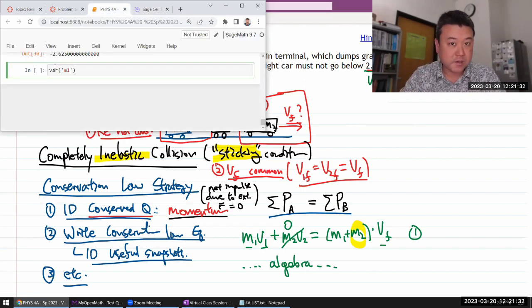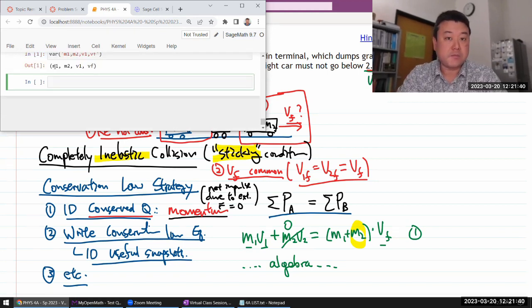Let me declare the variables I'm using. I need M1, M2, V1. I don't think I'm going to use V2, V final. Okay. So those are my variables.